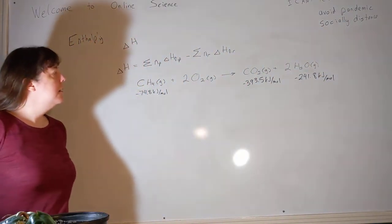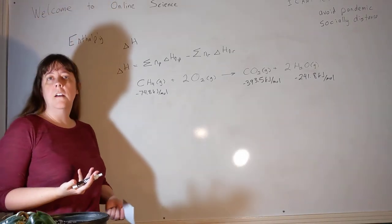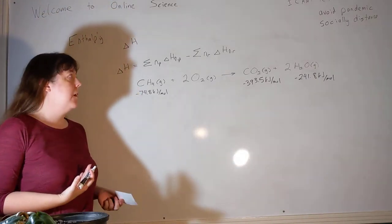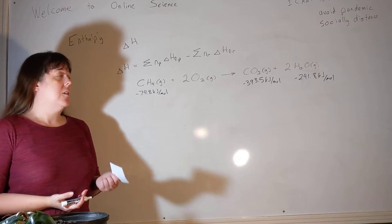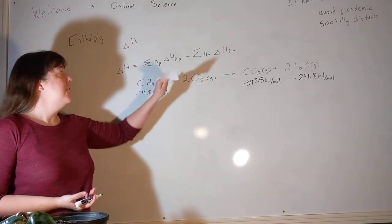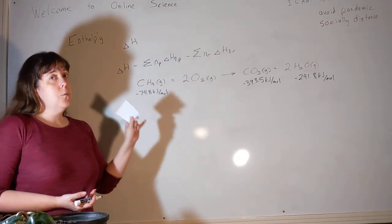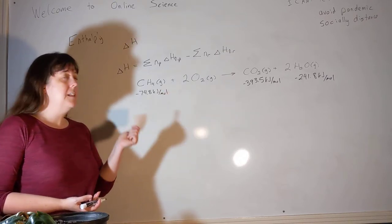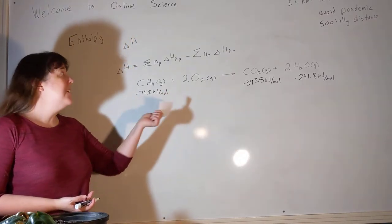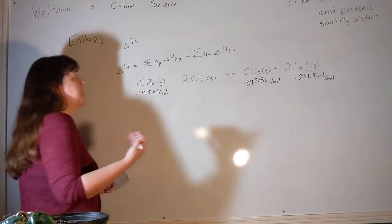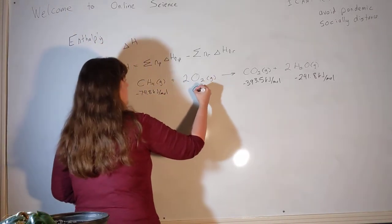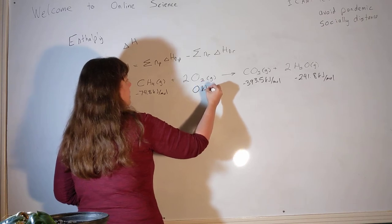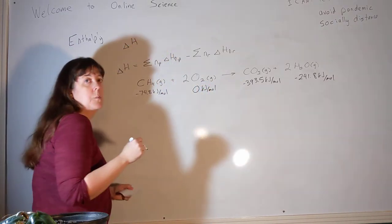What did I leave out? I left out oxygen. Why? Why didn't I put oxygen up here? Because I won't always find oxygen at the table, and that's because the delta HF is the heat required or released to create this substance from its elements in their standard state. This is oxygen's element in its standard state. So the heat of formation for any element is zero. Zero kilojoules per mole.